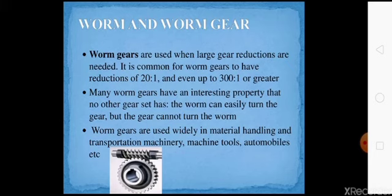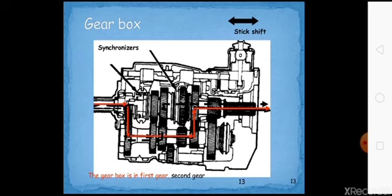Worm gears are used in material handling and transporting machinery, machine tools, automobiles, etc. This is a typical example of a gearbox.